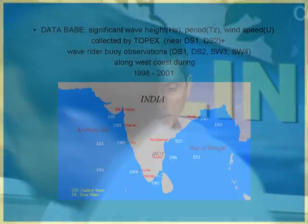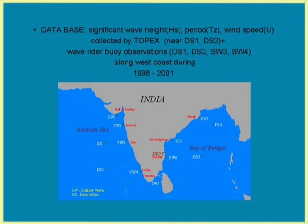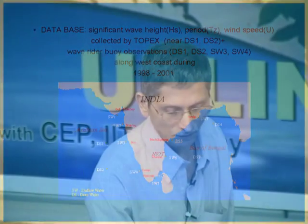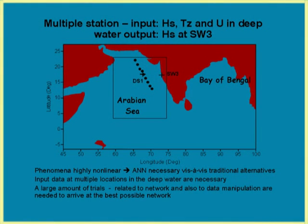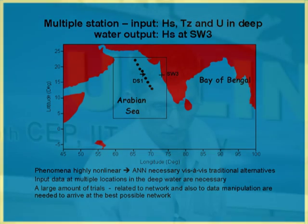We thought to provide an alternative using neural networks to project deep water data to shallow water. We had satellite TOPEX data of wind speed, wave height, and wave period, and also, for calibration, data collected by a wave rider buoy at these locations for four years. A neural network was developed where the input was wave height, wave period, and wind speed at several locations, and the output was the resulting wave height at a shallow water location.